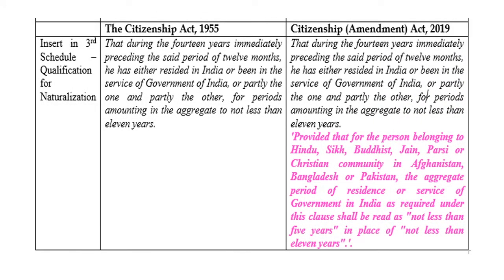Another change was in the 3rd Schedule. Before the amendment, the clause said that if a person is residing in India during the 14 years immediately preceding the set period of 12 months, amounting in the aggregate to not less than 11 years. Whereas after the amendment, the period of 11 years is substituted as a period of 5 years for any Hindu, Buddhist, Jain, Parsee or Christian from Afghanistan, Bangladesh and Pakistan.